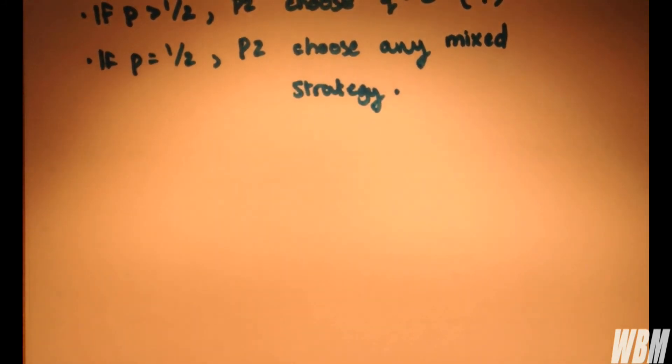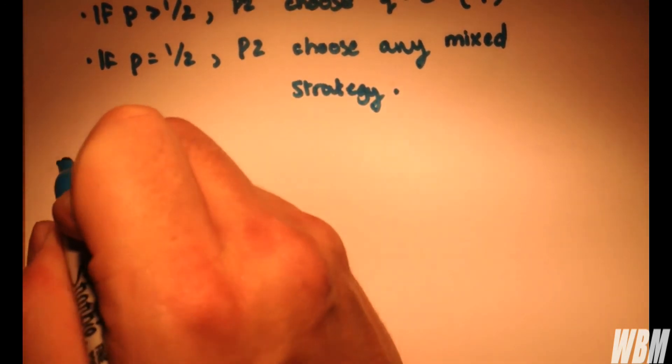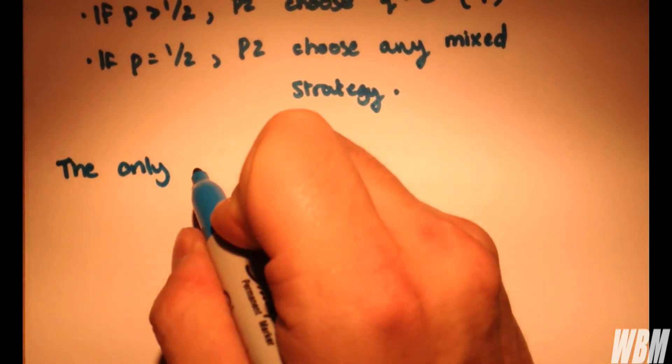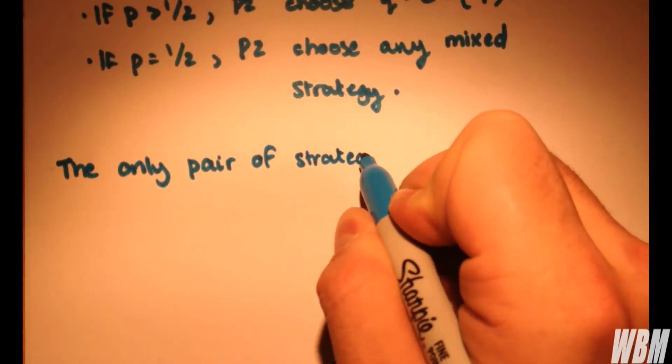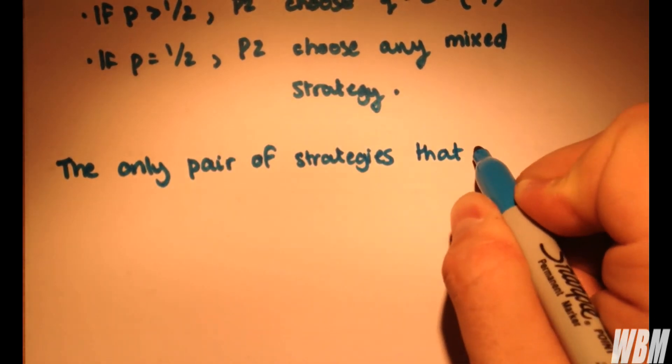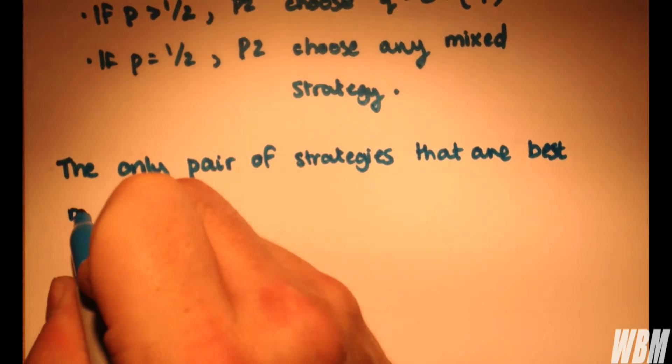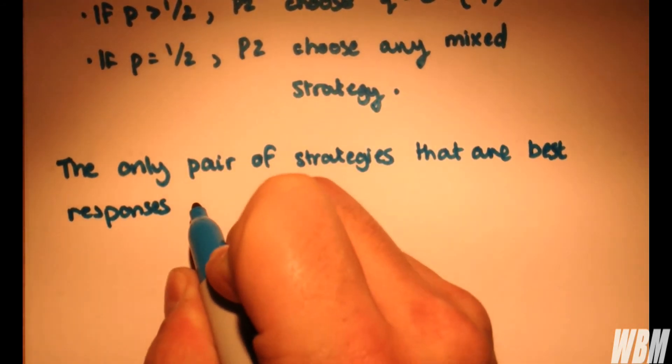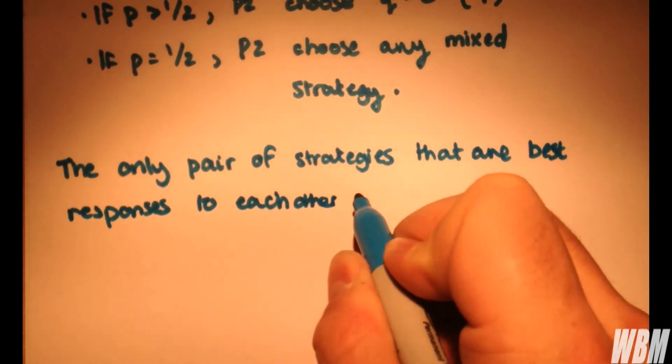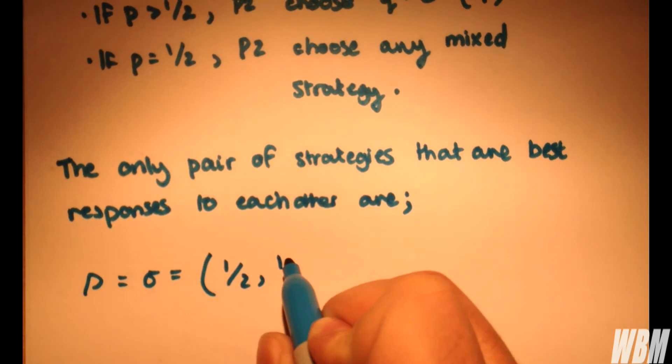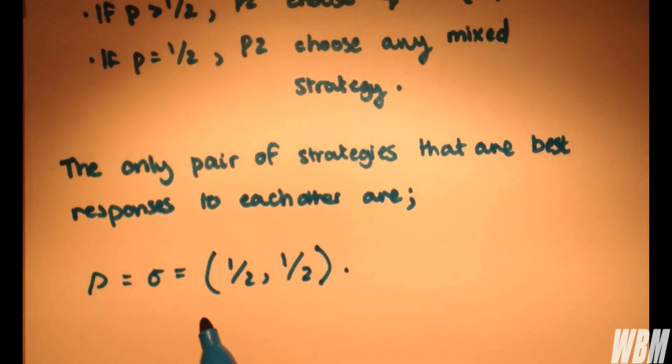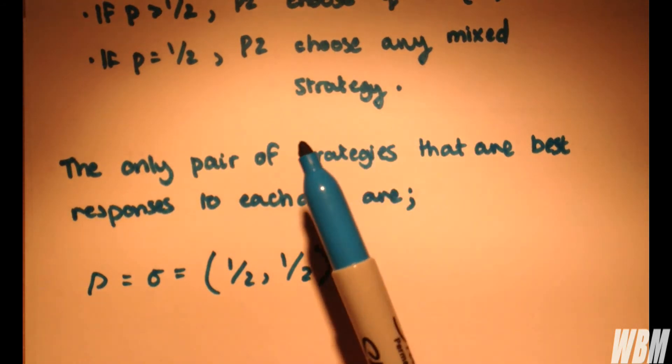So what does this actually mean? Well it means that the only pair of strategies that we can refer to as best responses are the following ones. The only pair of strategies that is the best response to each other are when we have probability equals a half, and we can choose any mixed strategy.